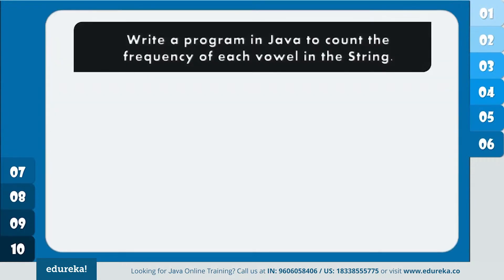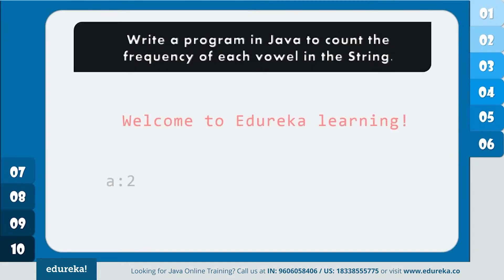The problem statement goes: write a program in Java to count the frequency of each vowel present in the string. In this particular statement, I have to count the vowels' frequency — that is, the occurrences of each vowel in the given statement. Let's see how to do that with the help of the code.